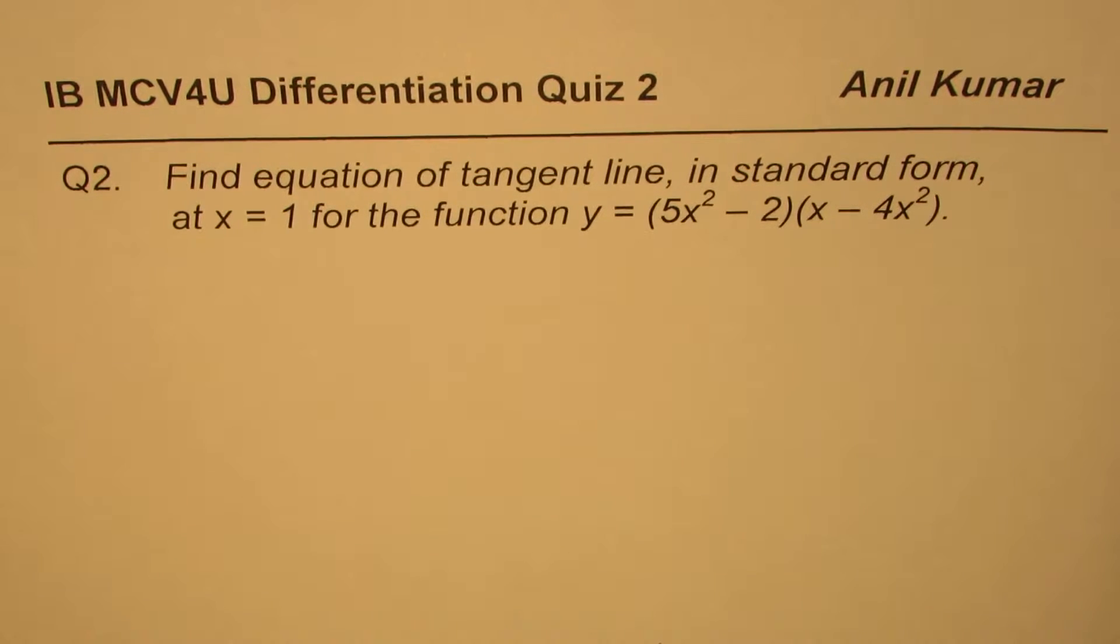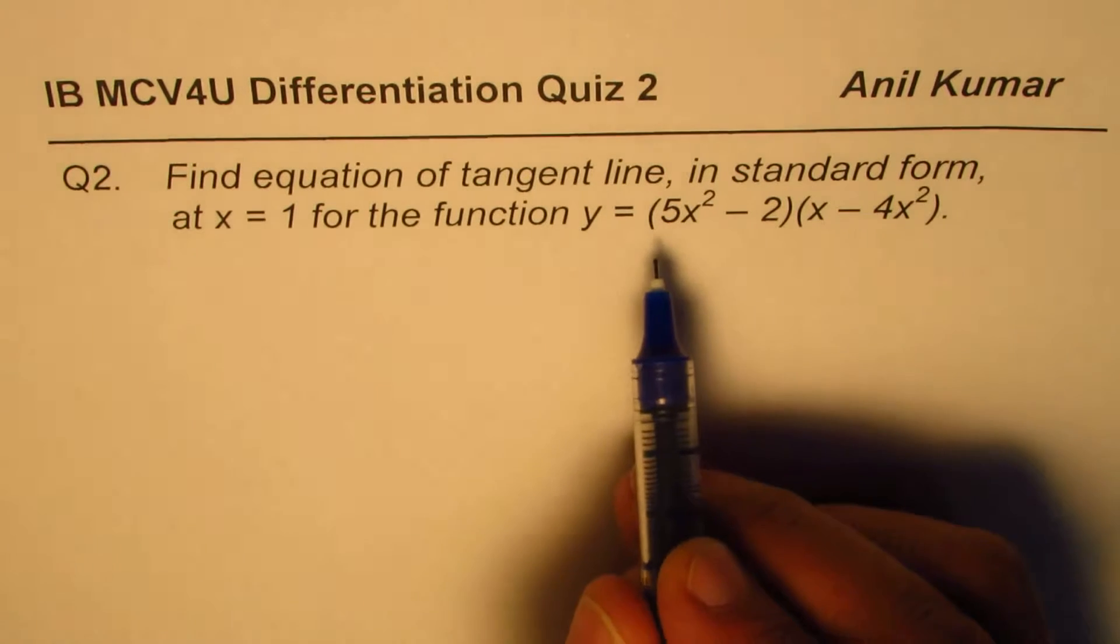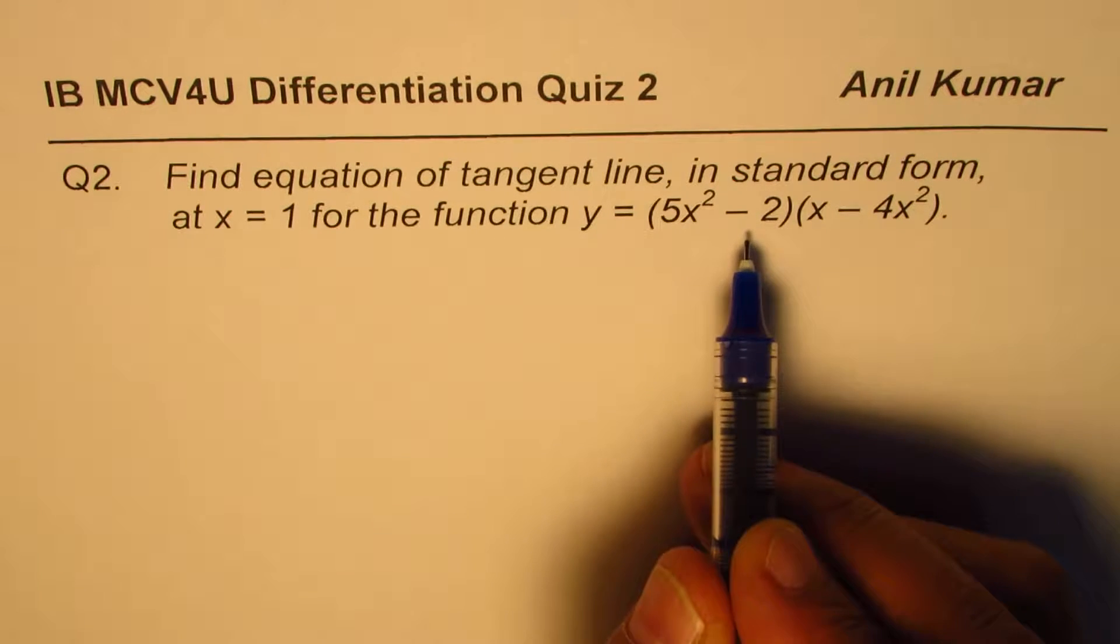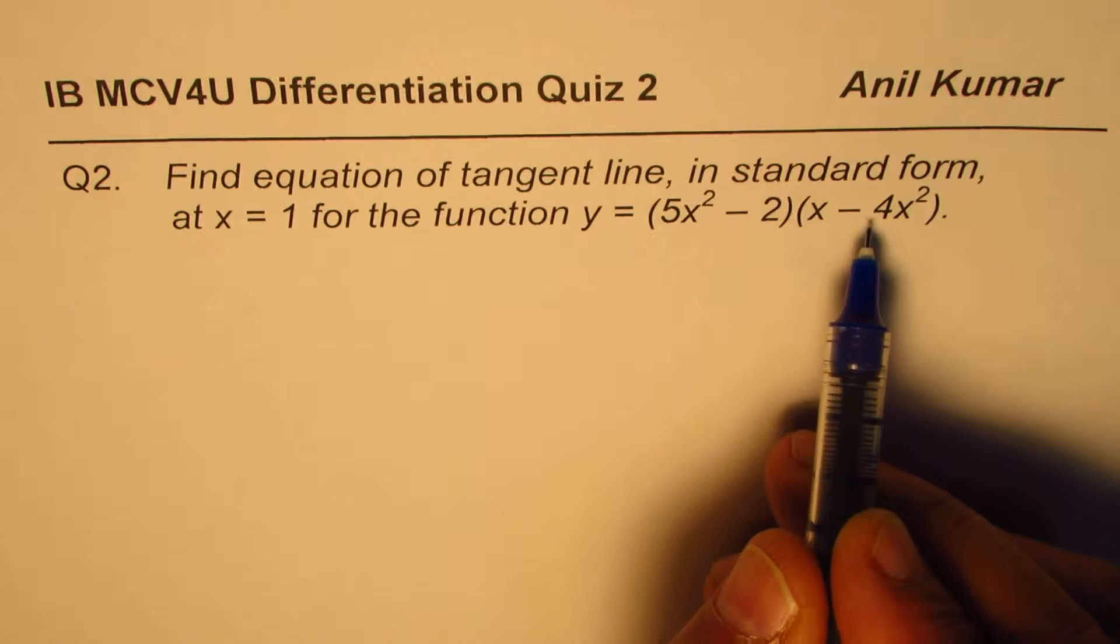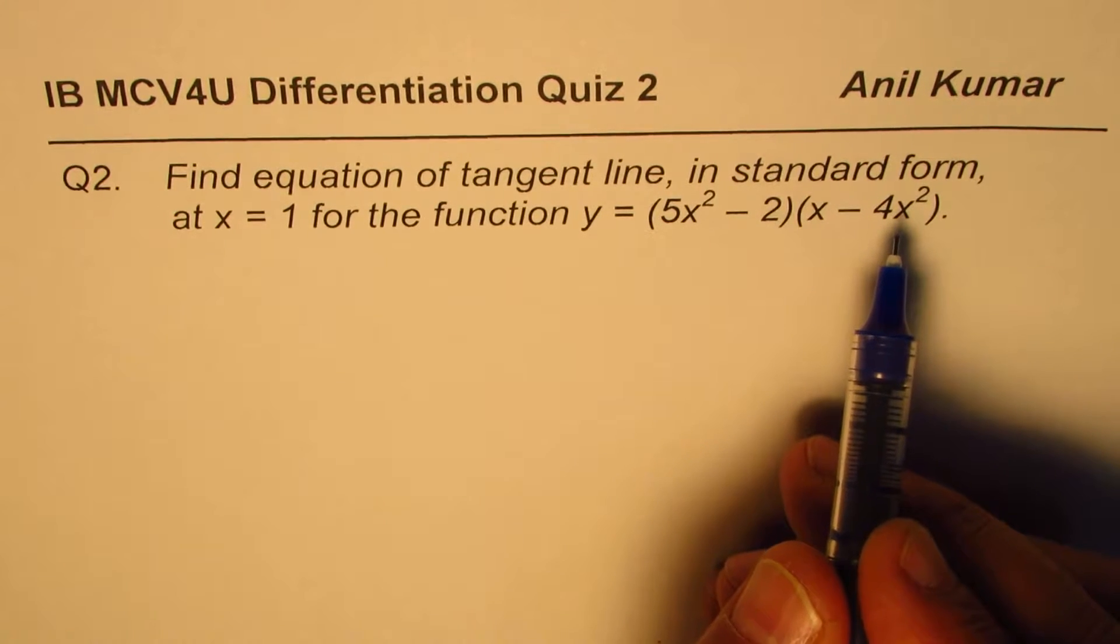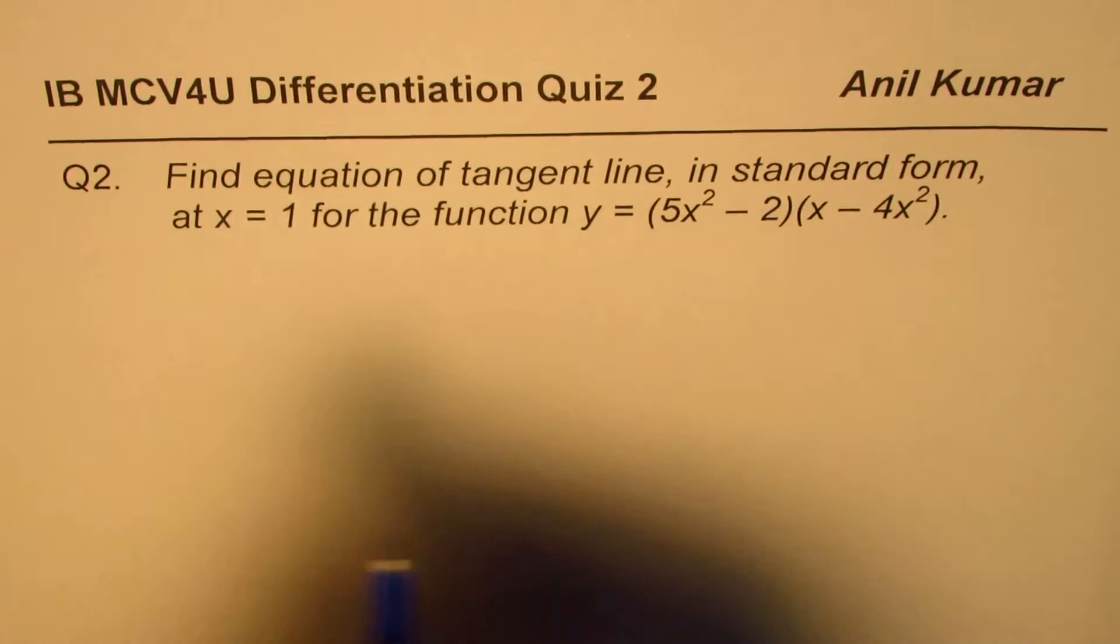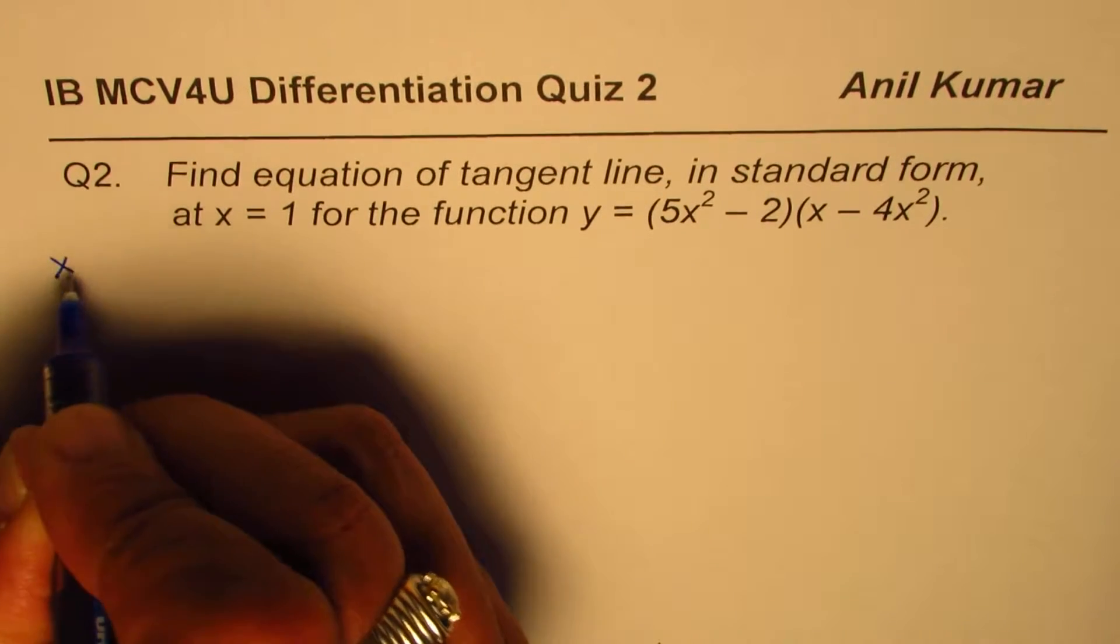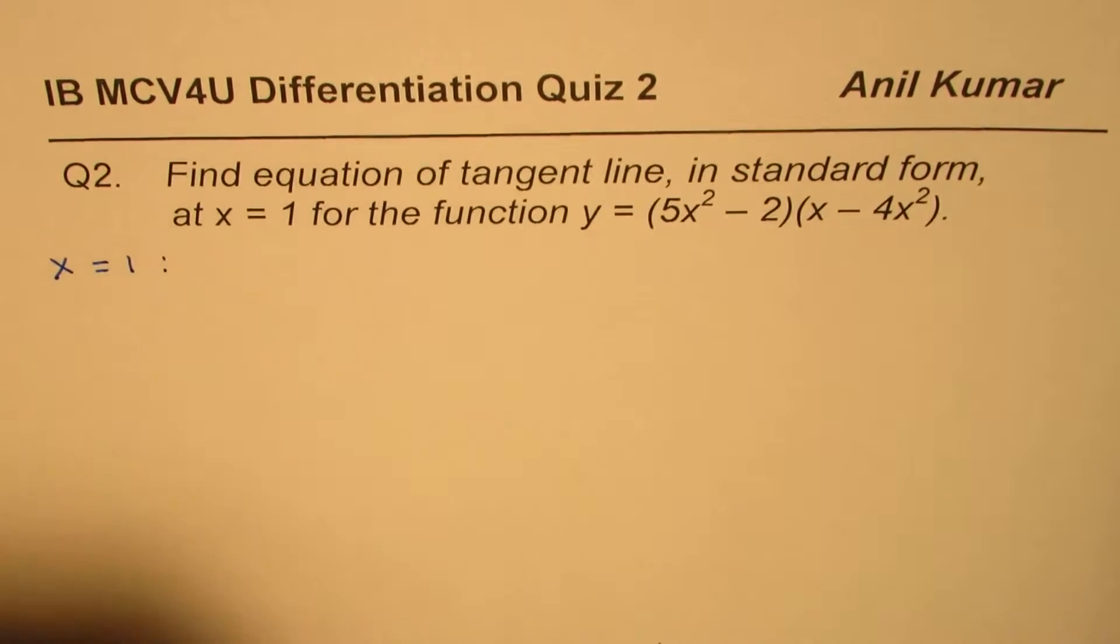Question number 2 here is find equation of tangent line in standard form at x equals 1 for the function y equals 5x squared minus 2 times x minus 4x squared. To begin with, we should find the point first. So find the value of y at x equals 1. So that is the first thing.